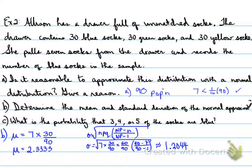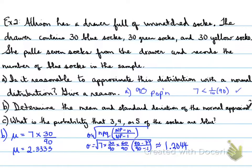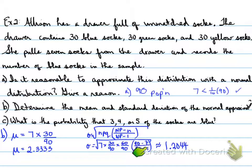To calculate the standard deviation, sigma equals the square root of n times p times q multiplied by the total population minus what we're choosing, divided by the total population minus 1. We have 7 times 30/90 times 60/90 multiplied by (90 minus 7) over (90 minus 1), which gives an approximation of 1.2044.